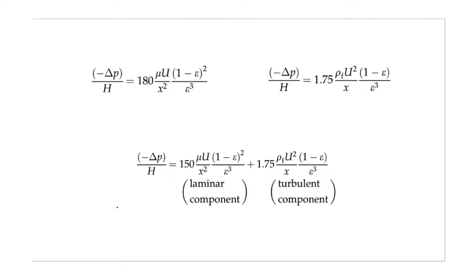The final equation that we're going to look at is this one here below. This equation is also known as the Ergen equation which is a general equation for pressure drop through a packed bed. As you can see it contains two parts: one is the laminar component and the other is the turbulent component. These are very similar to the two that we looked at before.